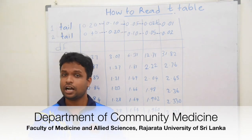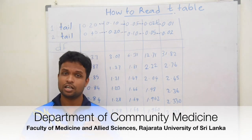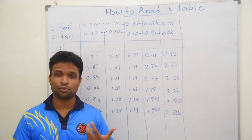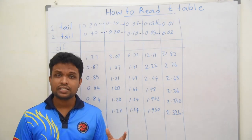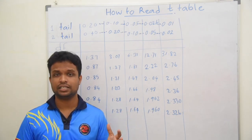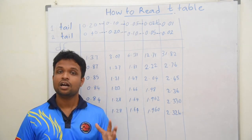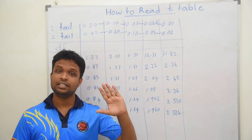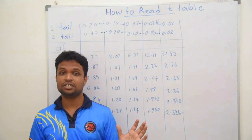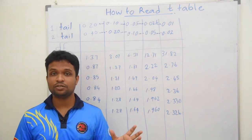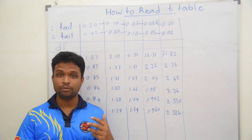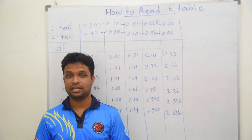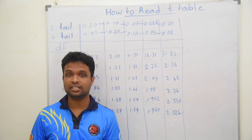Before starting the lecture, I must mention that nowadays we have statistical software and computers, so we don't use these tables. But to understand the basis of statistics, it is important to understand how to read the T-table. In the previous lecture, I discussed the difference between the Z-distribution and T-distribution. The Z-table states the probabilities within the Z-distribution, and the T-table states the probabilities within the T-distribution.